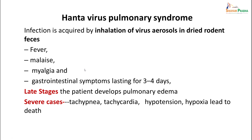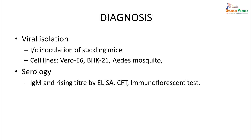Hantavirus pulmonary syndrome is usually acquired by inhalation of virus aerosols in dried rodent feces. It leads to fever, malaise, myalgia, and GI symptoms lasting 3 to 4 days. In late stages, the patient may develop pulmonary edema. In severe cases, tachypnea, tachycardia, hypotension, and hypoxia may lead to death. Diagnosis is by viral isolation via intracerebral inoculation of suckling mice, or by inoculating cell lines such as Vero E6 or BHK-21. Alternatively, IgM antibodies and rising titers of IgG antibodies can be shown by ELISA, CFT, or immunofluorescent test.